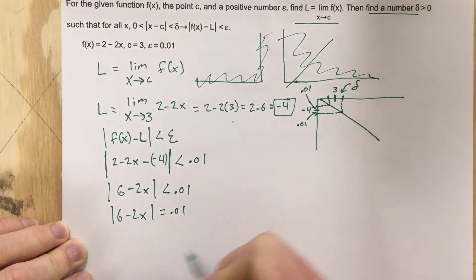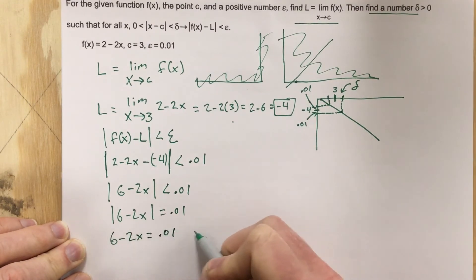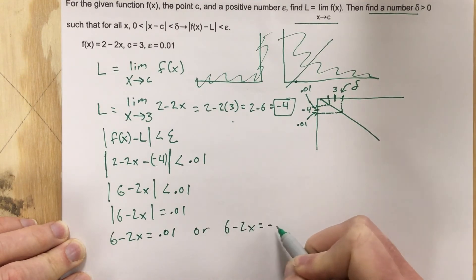And I like to write this out, then use the number line to do the inequality. So we're going to say 6 minus 2x equals 0.01, or 6 minus 2x equals negative 0.01.